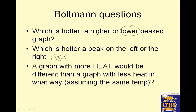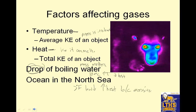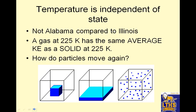A graph with more heat would be different than a graph with less heat — assuming the same temperature. Remember, heat is the total, so the peaks would be higher throughout the whole graph. Watch that axis, because this question might change. Temperature is independent of state. A gas at 225 K has the same average kinetic energy as a solid at 225 K — average kinetic energy is temperature.